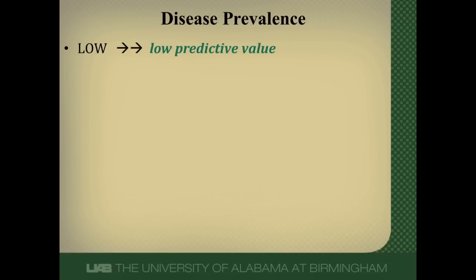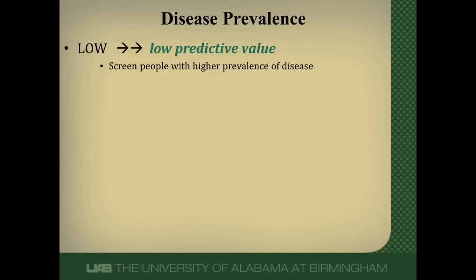Low prevalence of disease usually equals a low positive predictive value — meaning if the test is positive, there's a low probability that the patient actually has the disease. What we try to do is optimize screening populations by improving prevalence. For example, we don't do breast cancer screening in 20-year-old women because the prevalence is so low it's not worth looking for in that group. We start screening at a later age when prevalence goes up and makes our screening more worthwhile.